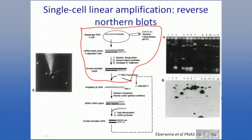In the original application, this wasn't for genomics at all, but for something called a reverse northern blot. A normal northern blot: you run a complicated RNA mixture on a gel and probe it with a sequence-specific probe to see how much of that sequence was present. A reverse northern blot reverses this — instead of running your complicated mixture on the gel, you run just one sequence on the gel, and you use the mRNA amplified a million-fold from single cells over two rounds as your labeled probe, to see quantitatively how much of each message is present in your single cell.